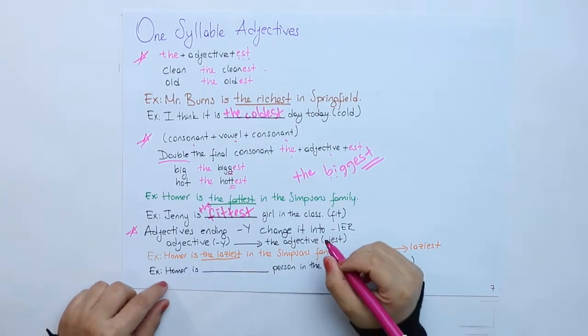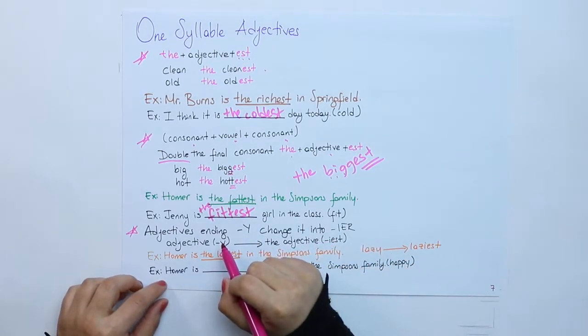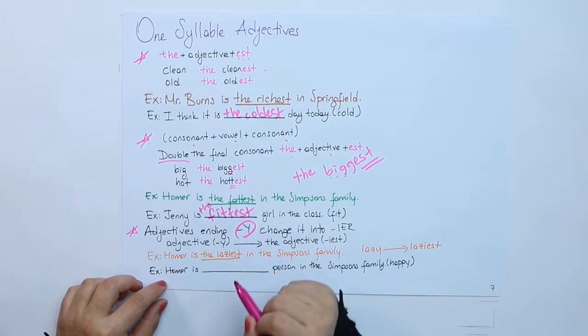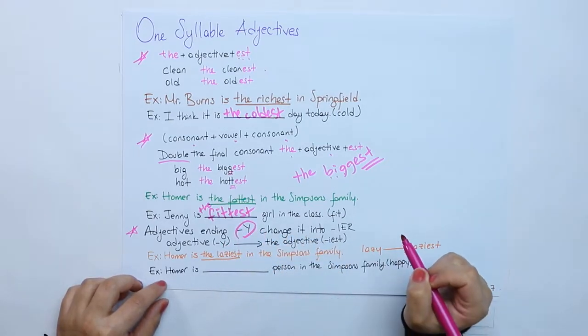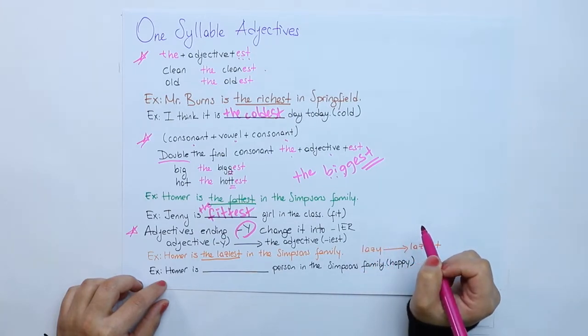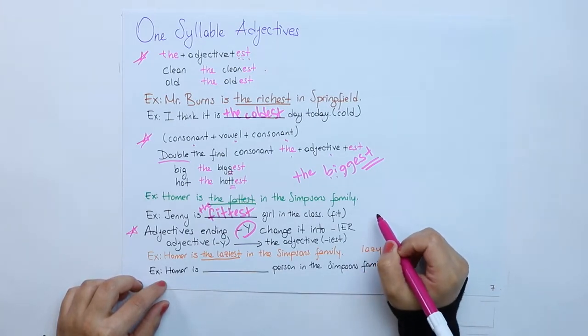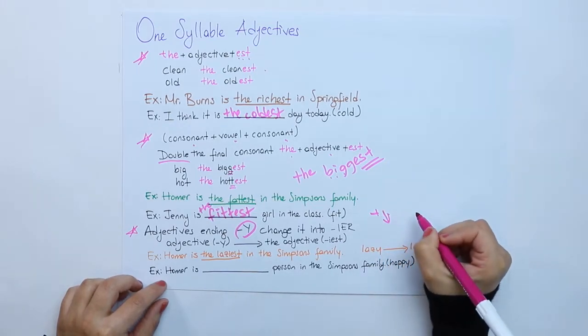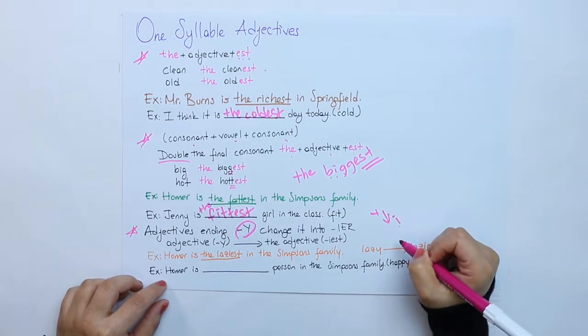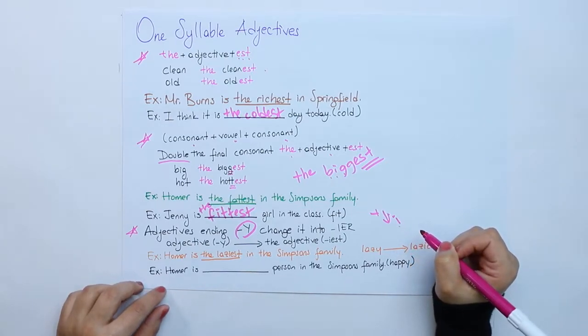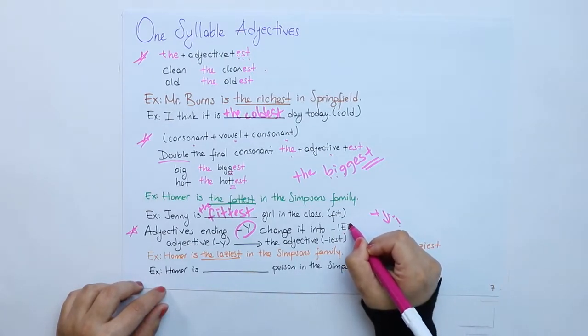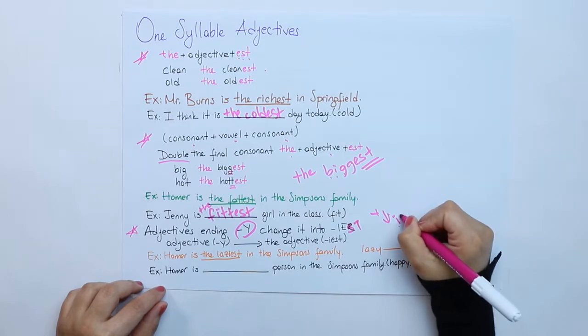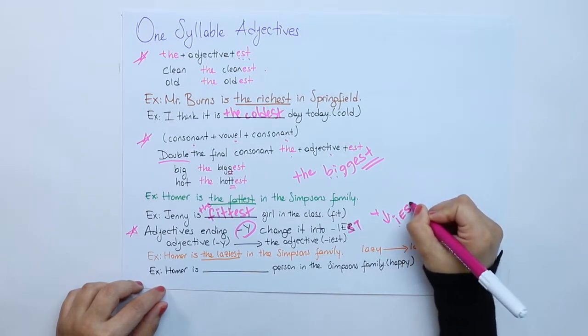Let's move to the adjectives which end with Y, change into IER. The letter Y again drops and turns out to I and gets EST.